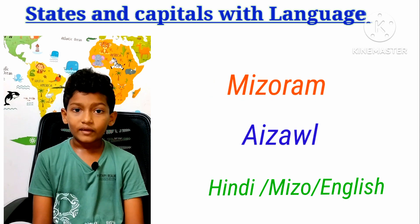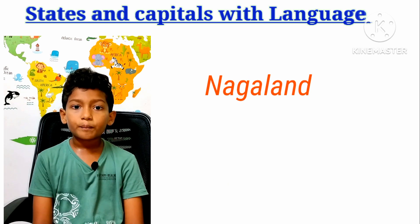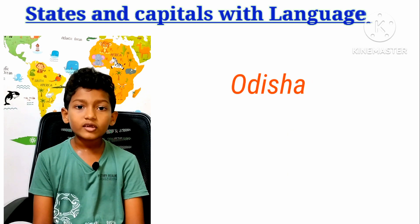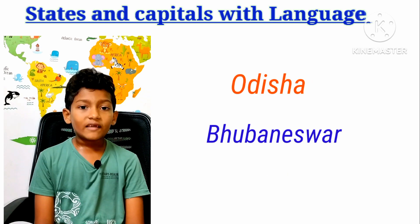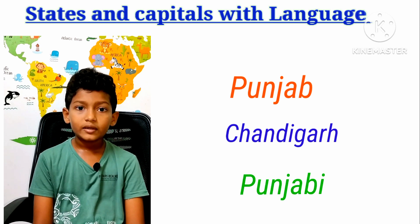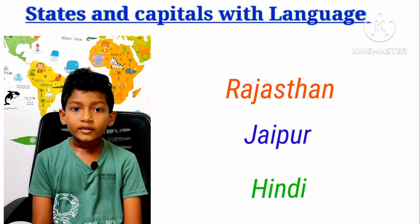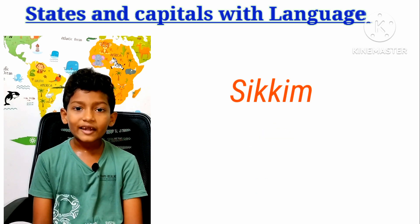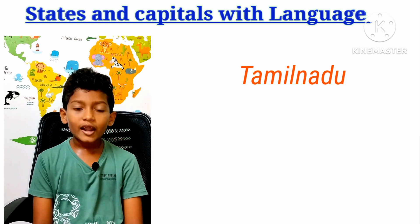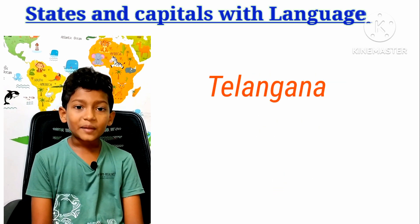Mizoram chapter: Aizawl, Language: Hindi, English and Mizo. Nagaland chapter: Kohima, Language: English. Odisha chapter: Bhubaneswar, Language: Odia. Punjab chapter: Chandigarh, Language: Punjabi. Rajasthan chapter: Jaipur, Language: Hindi.